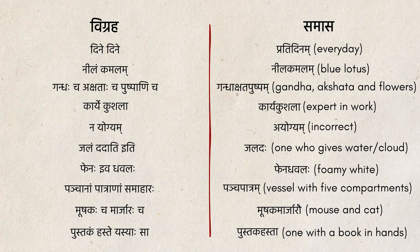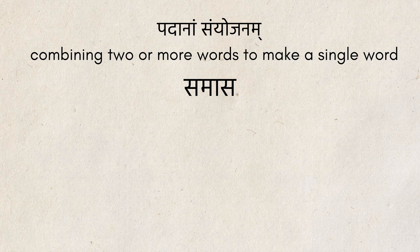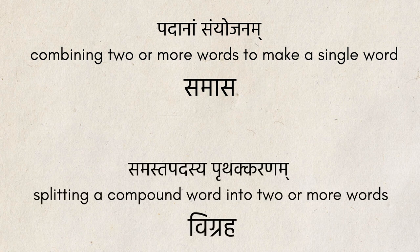In the same way: कार्यकुशलः — कार्ये कुशलः। अयोग्यम् — न योग्यम्। जलदः — जलम् ददाति इति। फेनधवलः — फेनः इव धवलः। पञ्चपात्रम् — पञ्चानाम् पात्राणाम् समाहारः। मुषकमार्जारौ — मुषकश्च मार्जारश्च। पुस्तकहस्तः — पुस्तकम् हस्ते यस्य सः। Combining two or more words to make a single word is called समास, and splitting a compound word into its component words is called विग्रह।